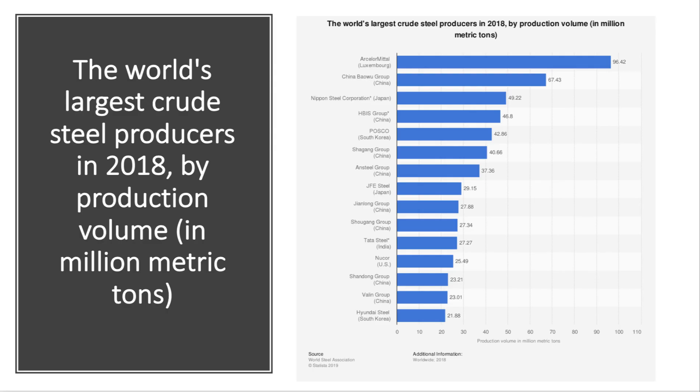The biggest steel producer in the world is actually based in Luxembourg. ArcelorMittal was ranked as the world's biggest steel producer in 2018 by some distance, producing just under a hundred million metric tons of crude steel that year. Notice in this chart how many of the biggest steel producers in the world come from China, Japan and South Korea.